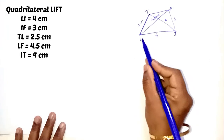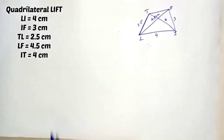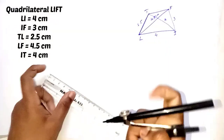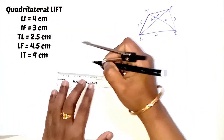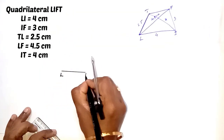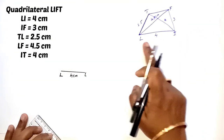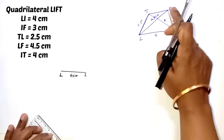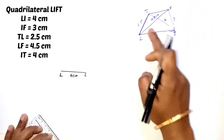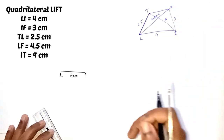Now first we can draw LI with radius 4 cm. LI is equal to 4 cm. First we can construct triangle LIF. We know LF and IF, so we can easily locate the point F.